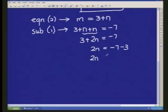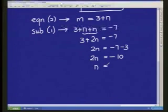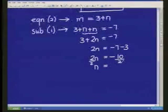2n is equal to minus 10. So now all you need to do is solve for n. So what are you going to get for n? We divide both sides by 2. Yes, we do. And if we divide both sides by 2, we're going to get n is how much? Negative 5. Nice. Good.